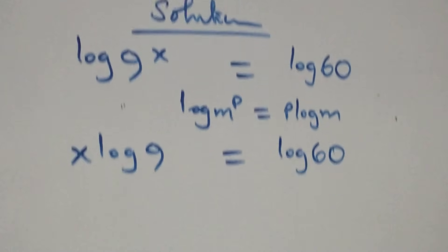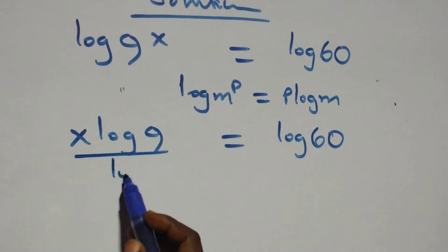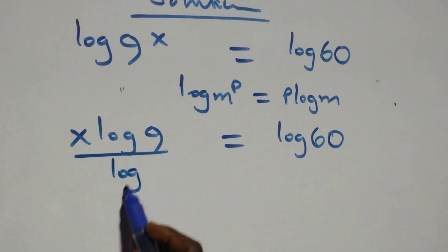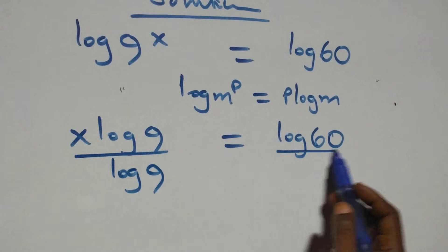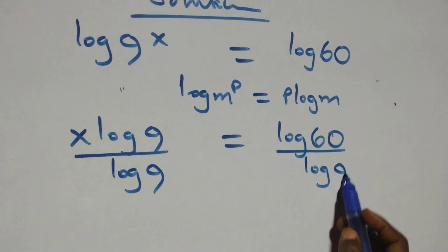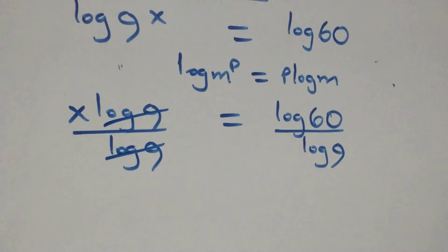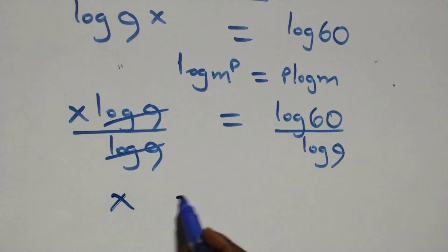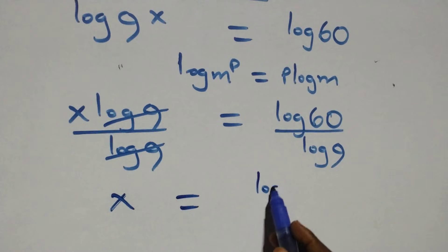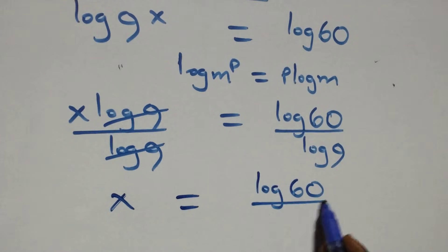The next step, we divide both sides by log 9. We divide this side by log 9 and also divide this side by log 9. Log 9 cancels each other, and we have x equals log 60 over log 9.